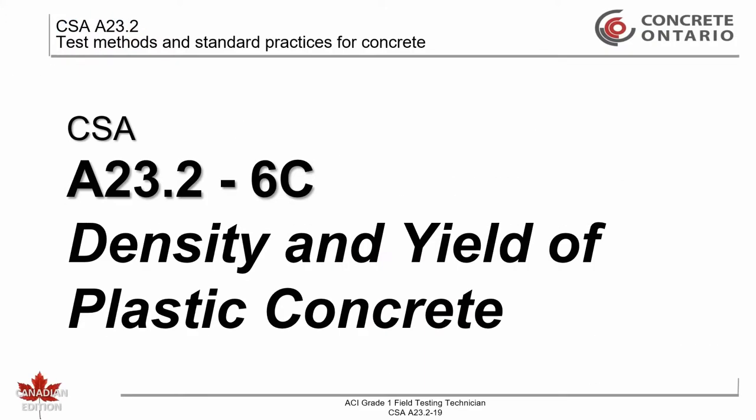CSA A23.2-6C, Density and Yield of Plastic Concrete. This test method specifies the procedure for determining the density of plastic concrete and includes formulas for calculating the volume of concrete produced from a mixture of known quantities of the component materials and the actual cementitious materials factor. This video demonstrates how to determine the density of the concrete only.